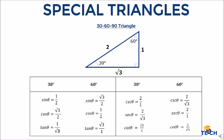For 60 degrees, the reciprocal functions are: cosecant theta is 2 over square root of 3. Secant theta is 2 over 1, or simply 2. And cotangent theta is 1 over square root of 3.